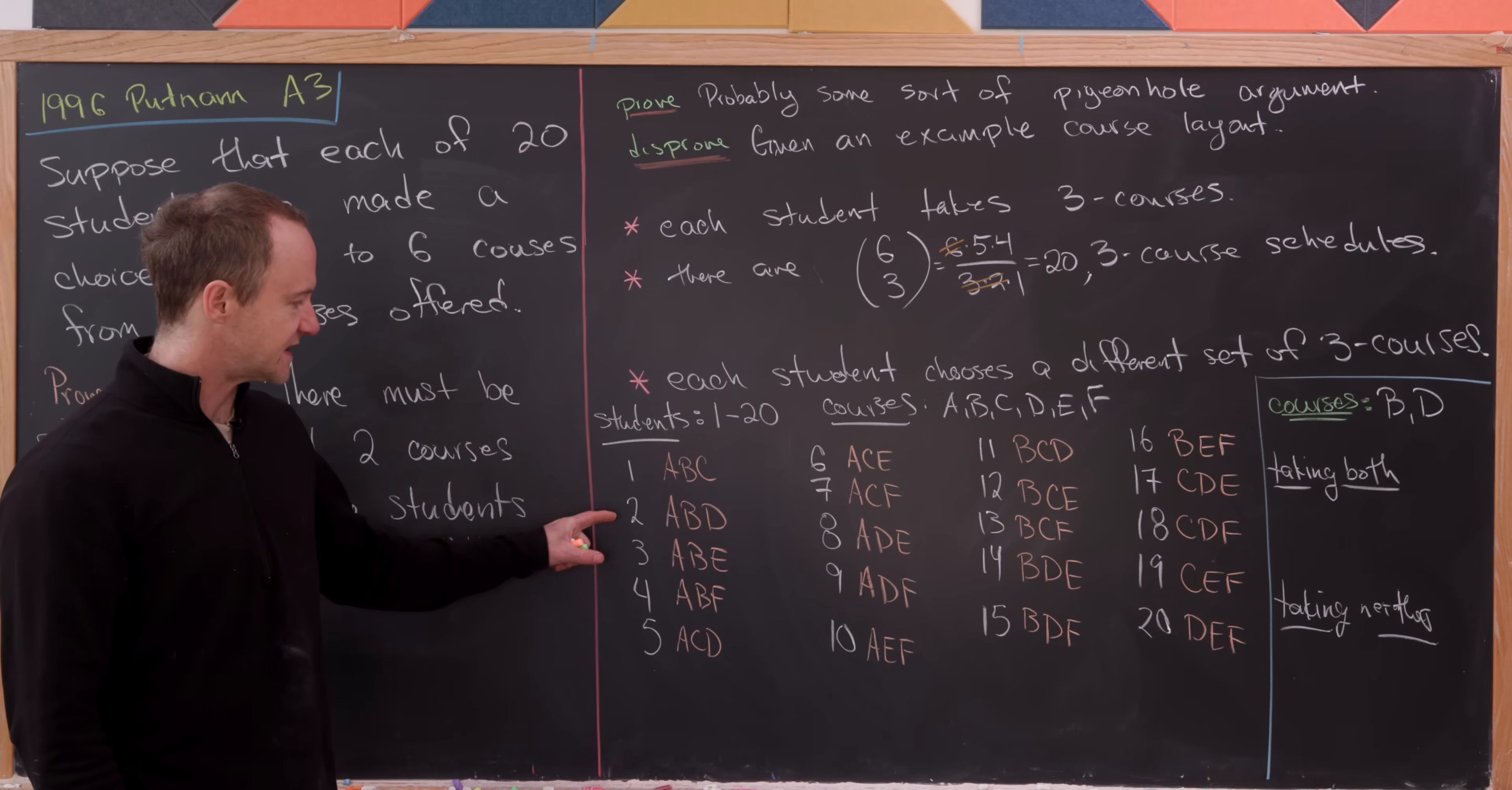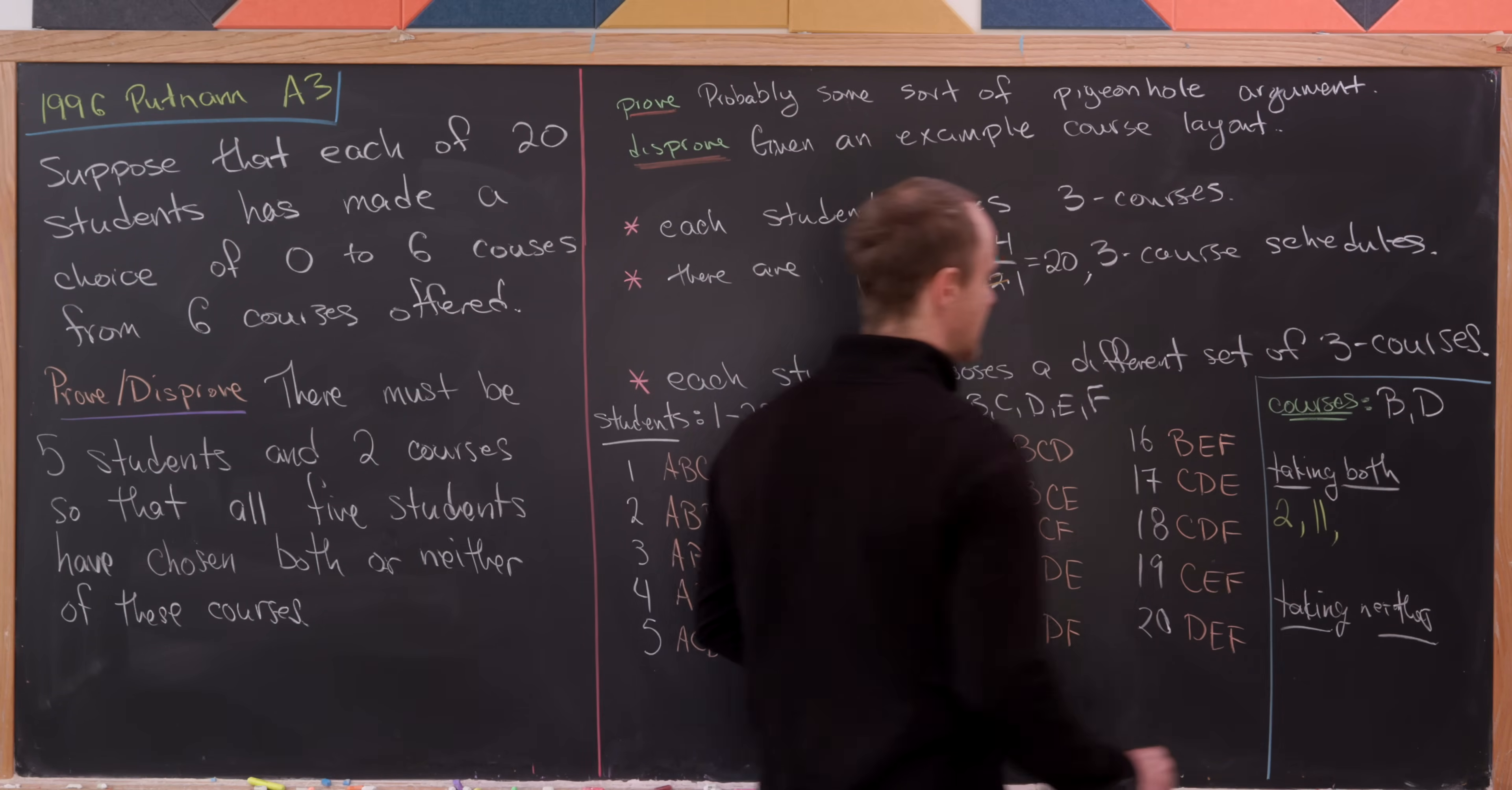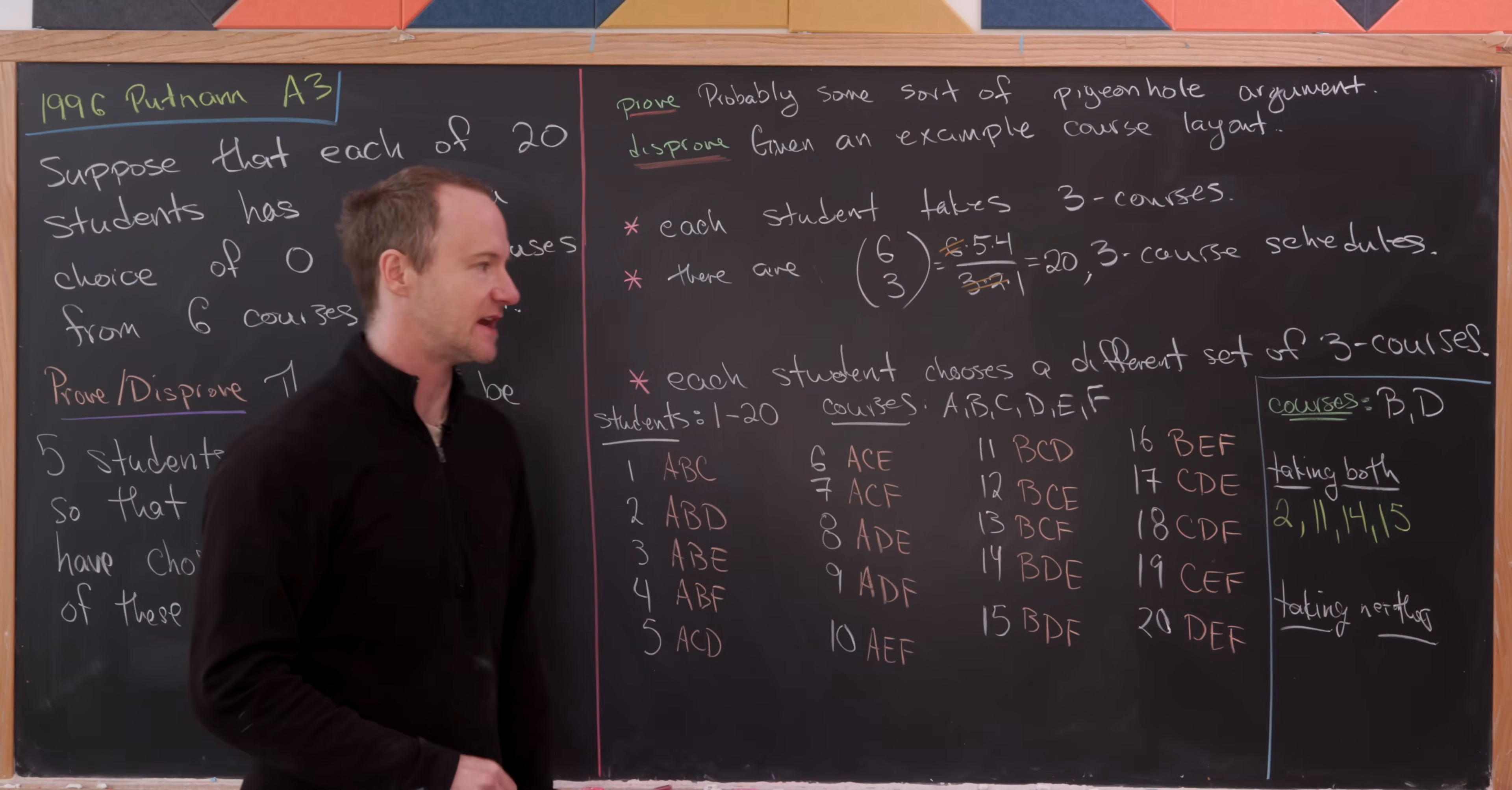So let's see. This person 2 is taking course B and course D. And then let's see. Where's the next one? So I think it's going to be over here. So this person over here, person 11, is taking course B and course D. And there are two more. Person 14 and person 15 are both taking course B and D.